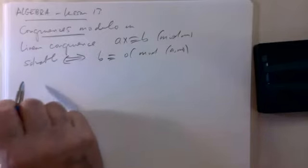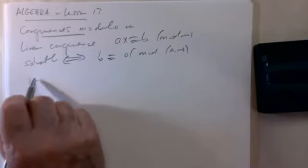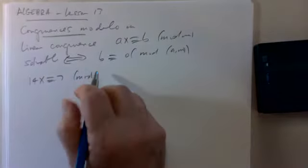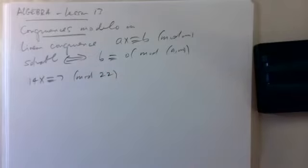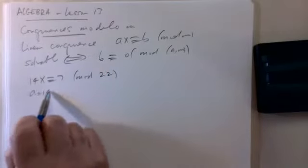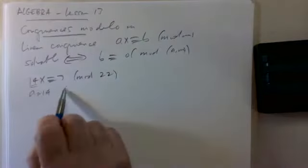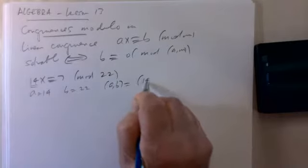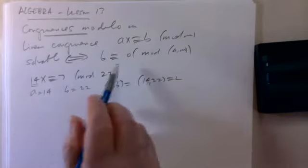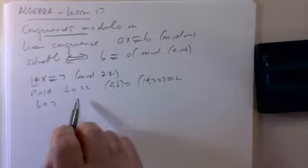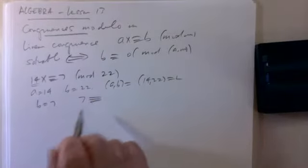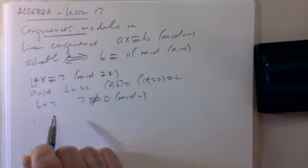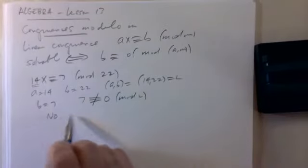So if you want to solve the congruence 14x ≡ 7 mod 22, you say: A is 14, B is 7, and the modulus is 22. The greatest common divisor of 14 and 22 is 2. B is 7, and 7 is not divisible by 2 — 7 is not congruent to 0 mod 2 — therefore, there is no solution to this congruence.